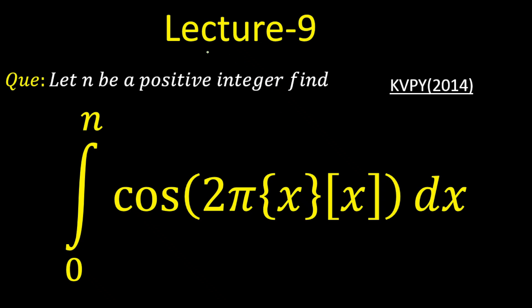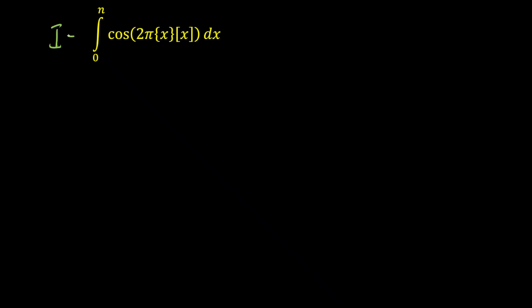Hello everyone, welcome to lecture number 9 of the integration series. In today's lecture, I am going to take a previous KVPY question which was asked in the year 2014. The question is: let n be a positive integer, then we have to calculate the value of the integration from 0 to n of cos(2π · {x} · ⌊x⌋). Let's call the value of this integration I.